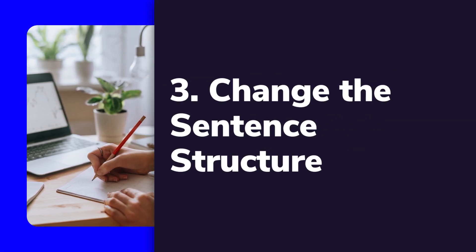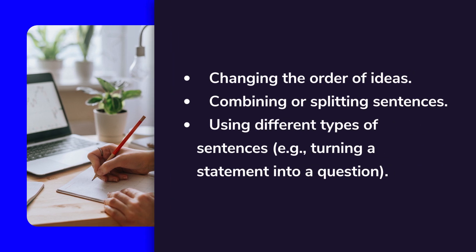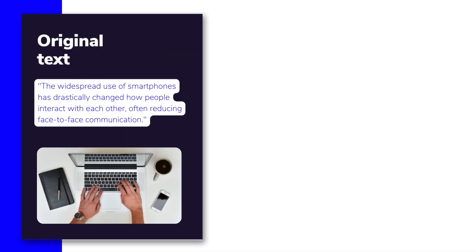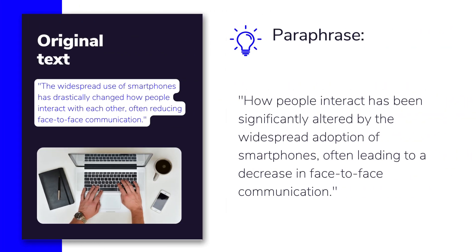Another great way to make your paraphrase your own is to change the sentence structure. You can do this by switching the order of ideas, combining or splitting sentences, or using different types of sentences, like turning a statement into a question. For example, if the original says 'The widespread use of smartphones has drastically changed how people interact with each other, often reducing face-to-face communication,' you might paraphrase it as: 'How people interact has been significantly altered by the widespread adoption of smartphones, often leading to a decrease in face-to-face communication.' Notice how the structure has changed, but the meaning stays the same. This approach really helps make your writing stand out.